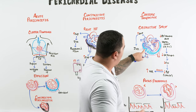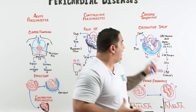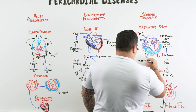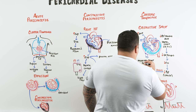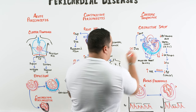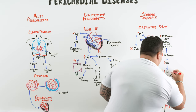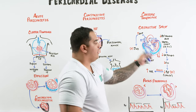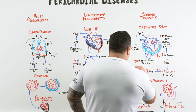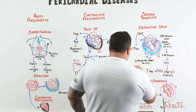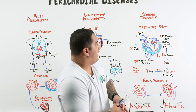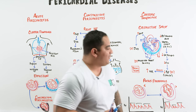When you see these three findings together: JVD, muffled heart sounds, and features of shock such as hypotension — that is classic cardiac tamponade. These three findings are called Beck's Triad. While not always all present in reality, it is super high yield for boards.